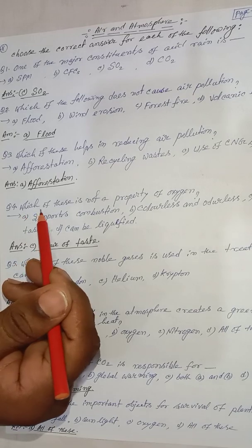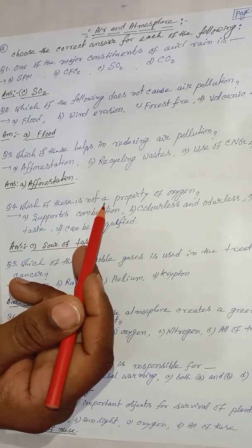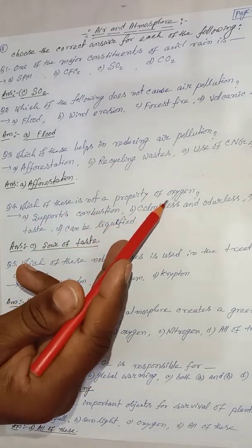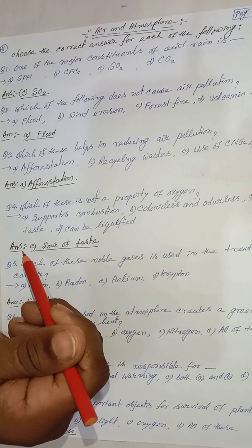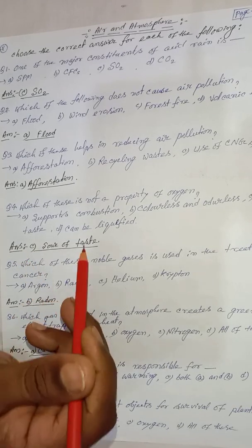Next question: which of these is not a property of oxygen? The correct answer is option C — SO3 test.